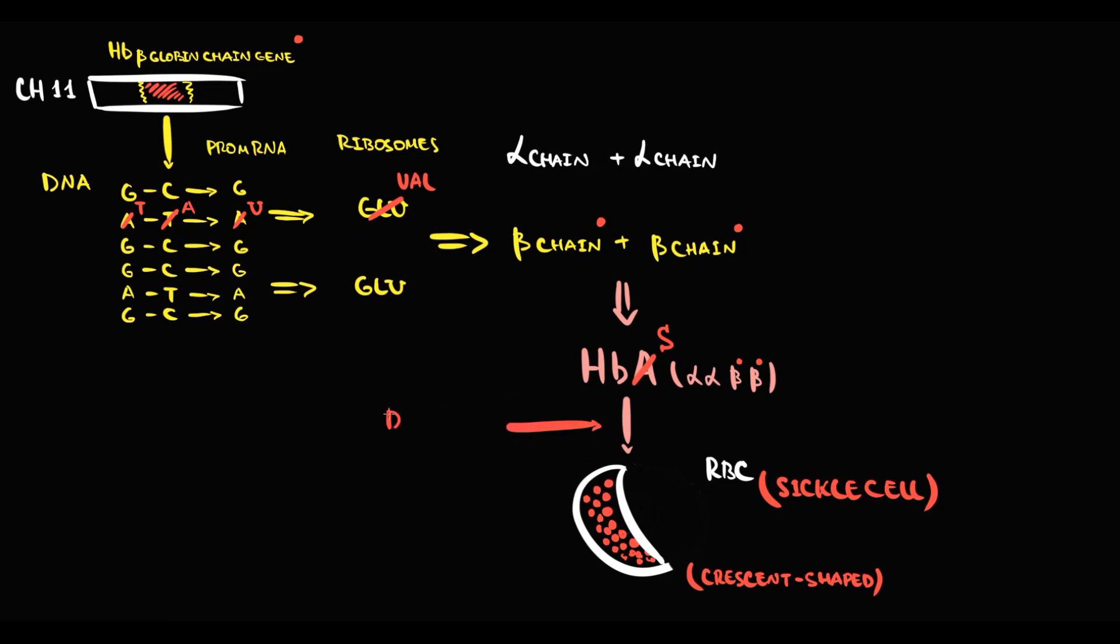Because hemoglobin S precipitates in the deoxygenated state, any condition that increases the amount of deoxygenated hemoglobin can provoke increasing precipitation rate, and thereby increasing formation of sickle cells. First of all, it's hypoxemia, at high altitude for example. Also it can be acidosis, because low pH forces hemoglobin S to release oxygen. So both these conditions cause increasing deoxygenated hemoglobin S, that precipitates with formation of sickle cells.